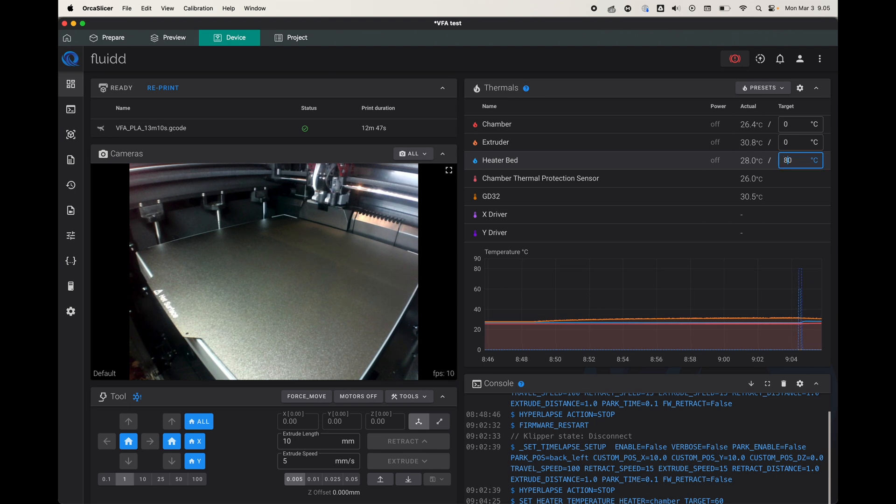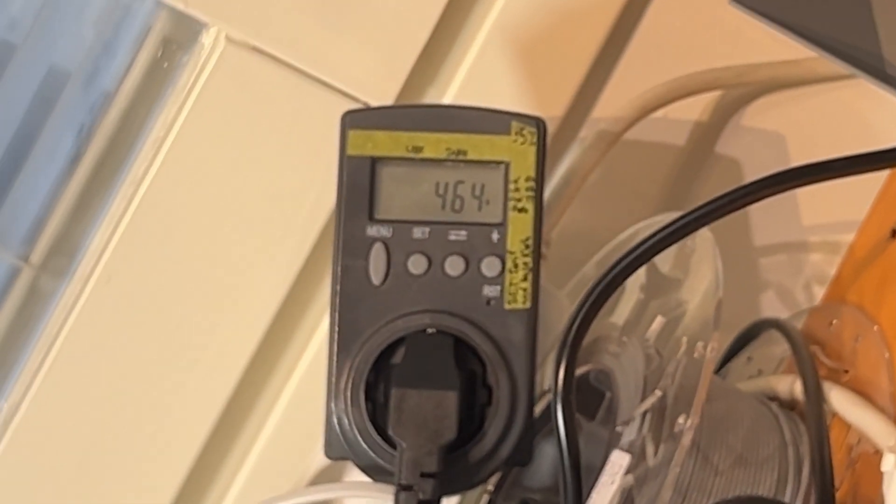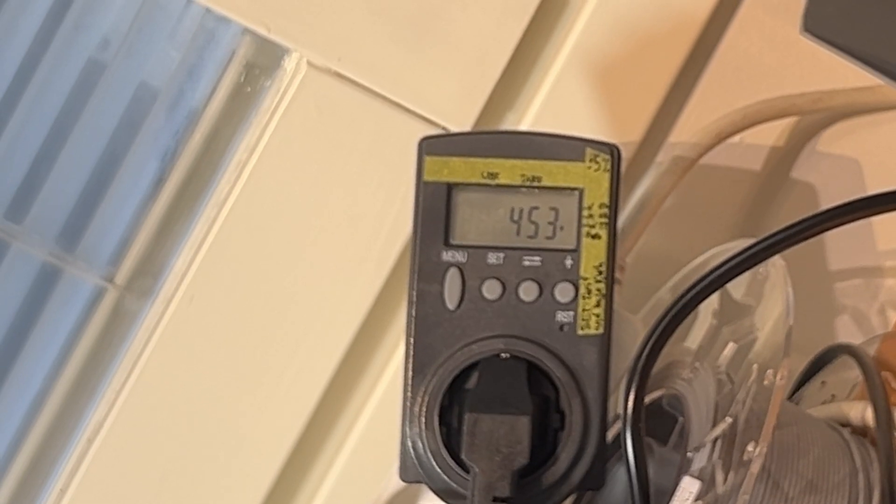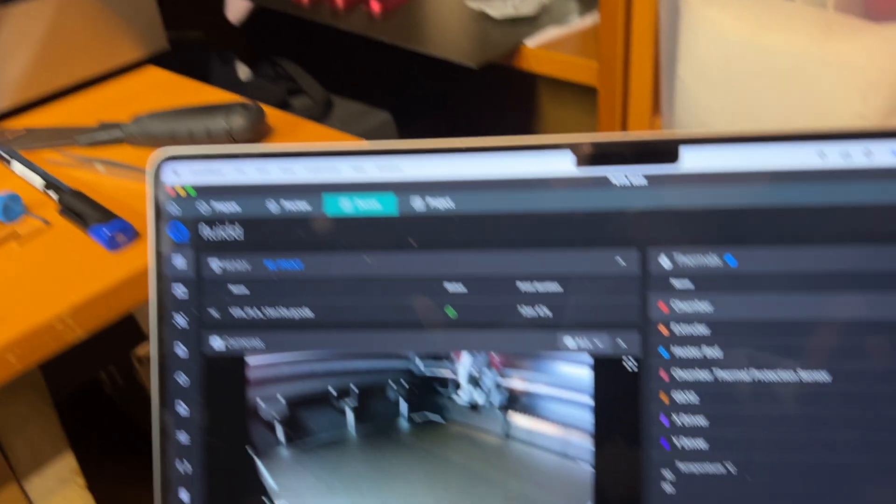Okay, so first let's start up heating the bed to 80 degrees. Now we can see that the bed is using a bit more than 400 watts. It was about 33 before this, so 420 watts about. So now overall we are at 450. Then we start the chamber heater at 60 degrees.